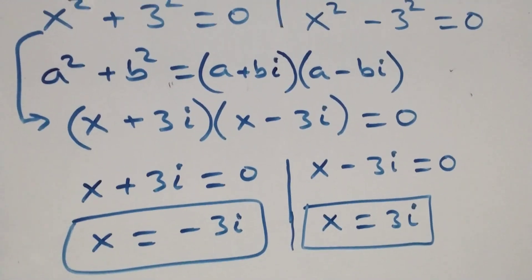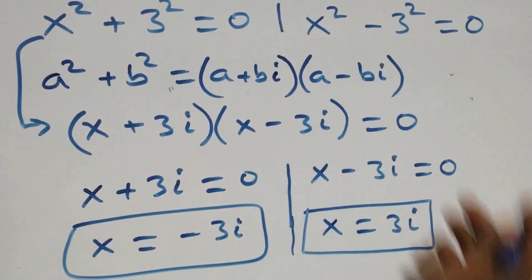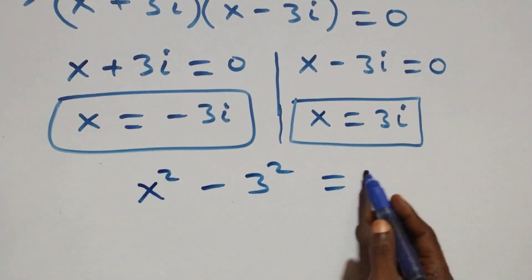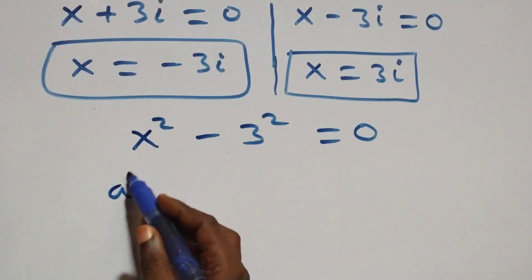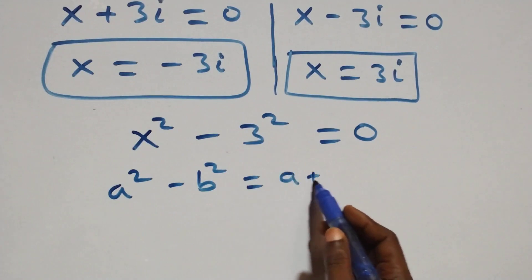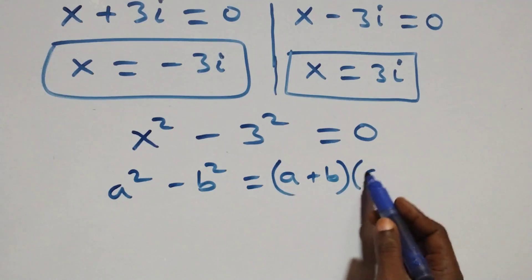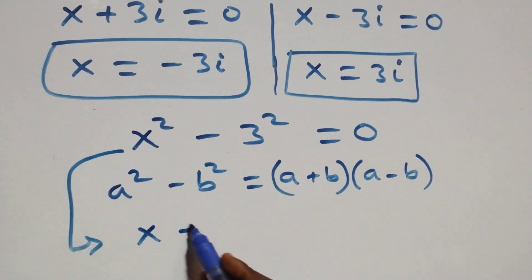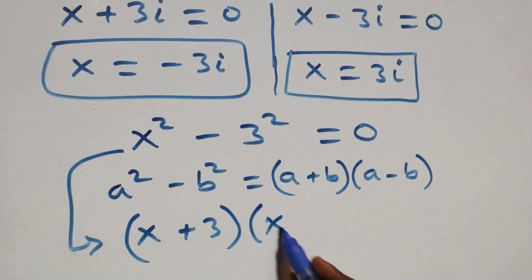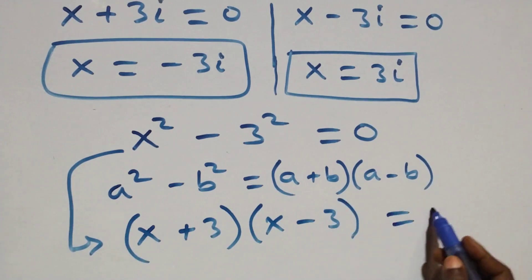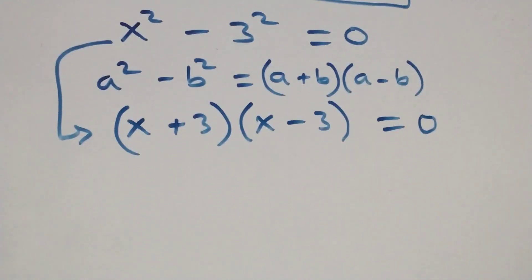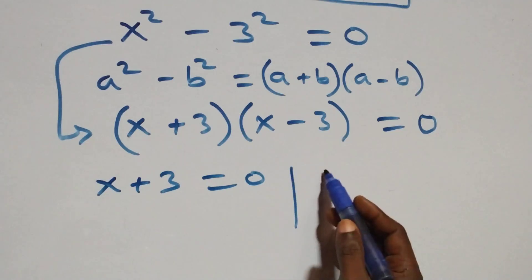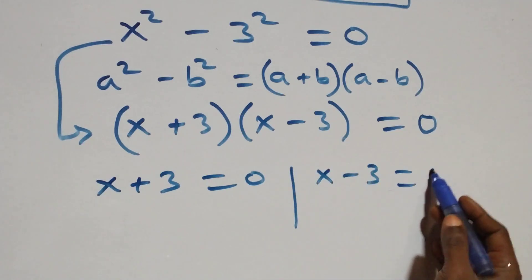Then solving the second case, which is x squared minus 3 squared equals to 0. This also follows when we have a squared minus b squared, the same thing as (a + b)(a − b). So what we have becomes (x + 3)(x − 3) equals to 0. At this, we have two possible cases: x + 3 = 0 or x − 3 = 0.